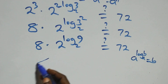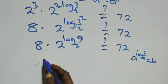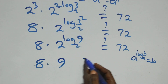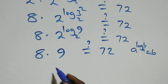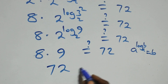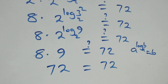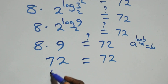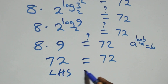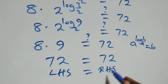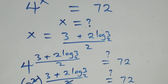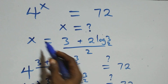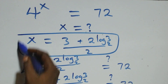This becomes 8 times 9. Is it equal to 72? Of course, 8 times 9 gives us 72. It is equal to 72. Left hand side equals to the right hand side. And therefore, we conclude that x equals to 3 plus 2 log 3 base 2 all over 2 satisfies this given problem.